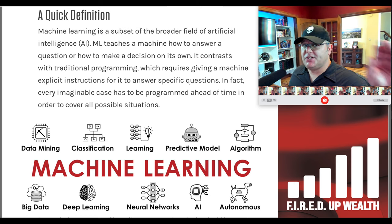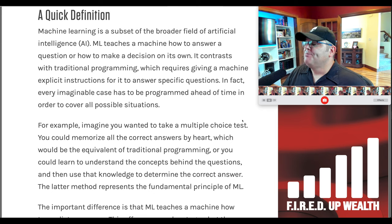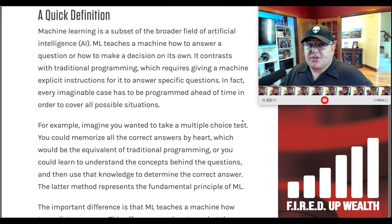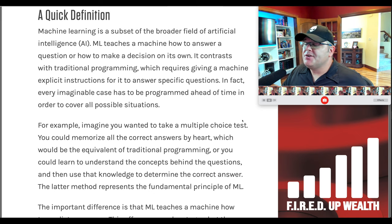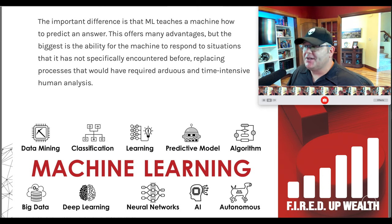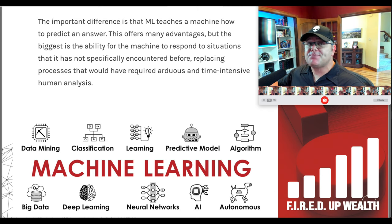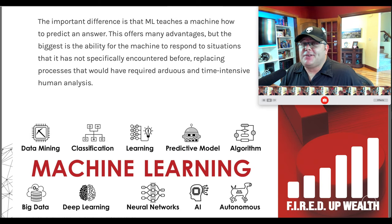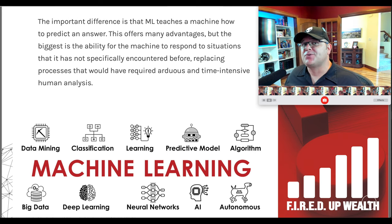For example, imagine you want to take a multiple choice test. You could memorize all the correct answers by heart — that's the equivalent of traditional programming. Or you could learn to understand the concepts behind the questions and use that knowledge to determine the correct answer. That latter method represents the fundamental principle of machine learning, replacing processes that would have taken humans a ton of time and manual labor.